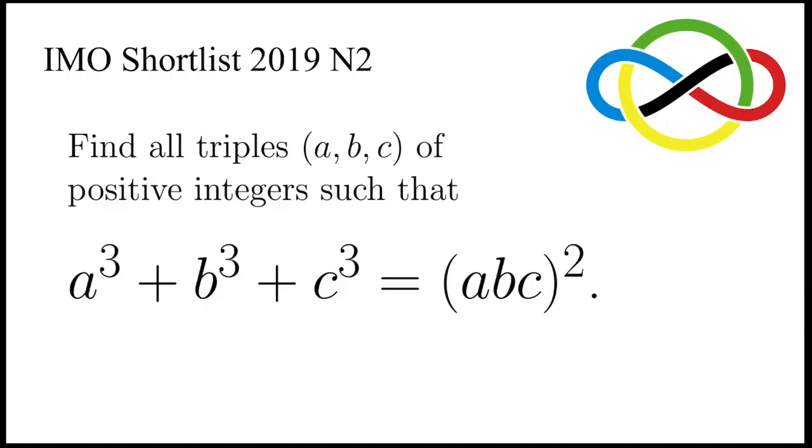Let's take a look at this problem taken from the shortlist in the IMO 2019. It says find all triples a, b, c that are all positive integers, such that a cubed plus b cubed plus c cubed equals abc whole squared.